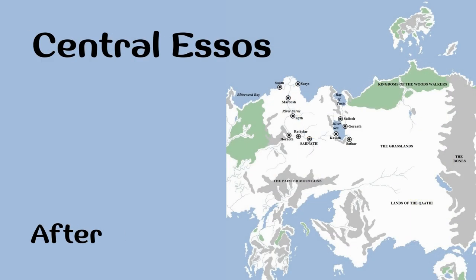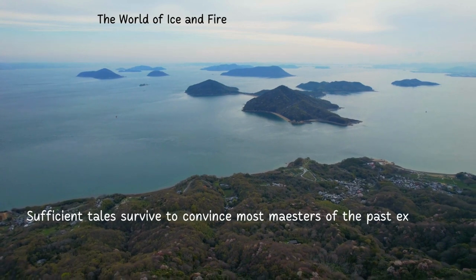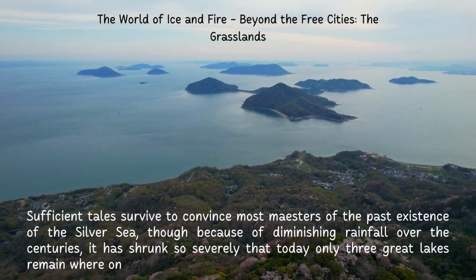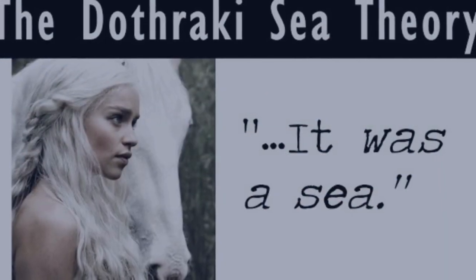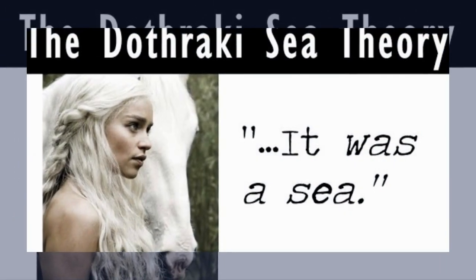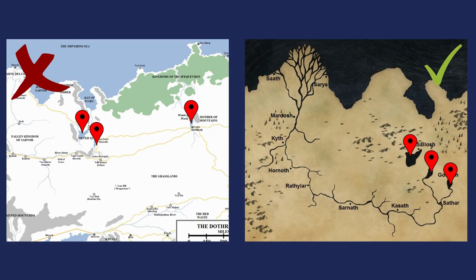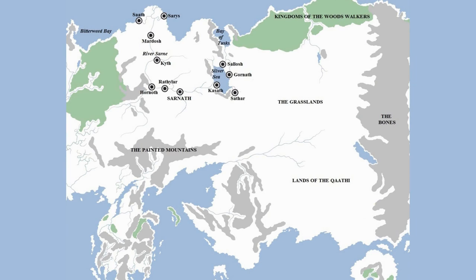In the Dothraki Sea on the other side we have some of the biggest differences — we have an inland sea where the grasslands are now. Sufficient detail survived to convince most maesters of the past existence of the Silver Sea, though because of diminishing rainfall over the centuries it has shrunk so severely that today only three great lakes remain where once its water glistened in the sun. Crawford's Daughter has a great video about the Silver Sea, but I think that when she came out with the video it wasn't yet mentioned what they meant by three lakes, and that there is a small mistake on the maps. When they say three lakes, they talk about these three, not these two and the Womb of the World. I still agree with her video — the description of the geography and the fact that many flatlands were created by big inland bodies of water makes me believe that the Silver Sea was very big.